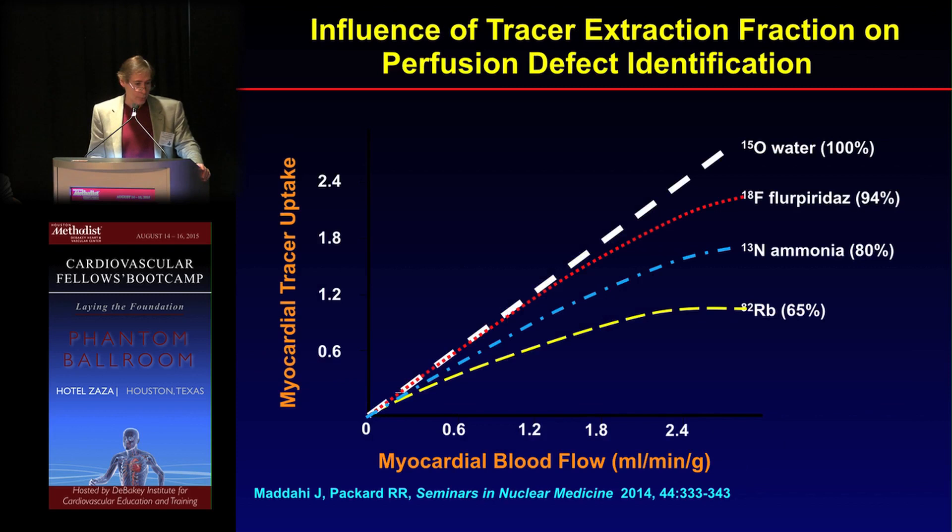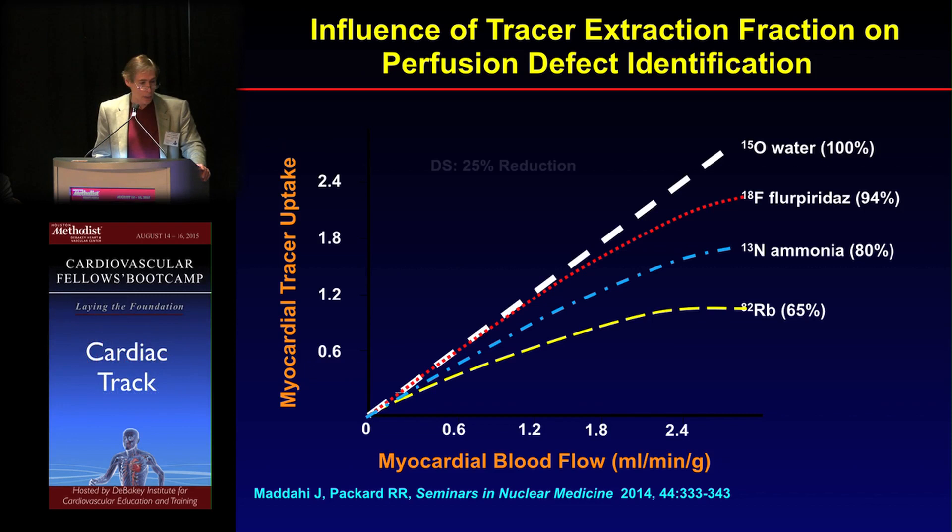To show how that works: take O-15 water, which is taken up linearly according to blood flow. Then look at one of these newer agents called fluorpiridaz, which is also pretty linear, versus rubidium, which has a lot of rollover at high flow rates.